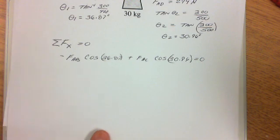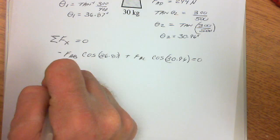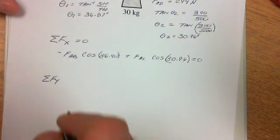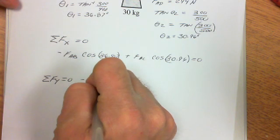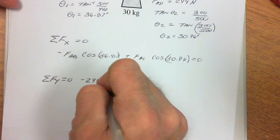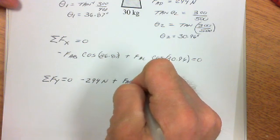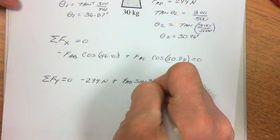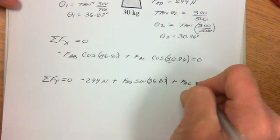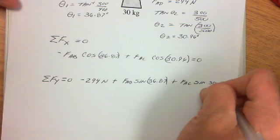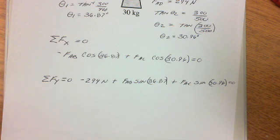Now we'll sum the forces in the y direction. Setting that equal to zero, the forces are: negative 294 newtons going down, plus FAB times the sine of 36.87, plus FAC times the sine of 30.96, and that equals zero. So there are our two equations.